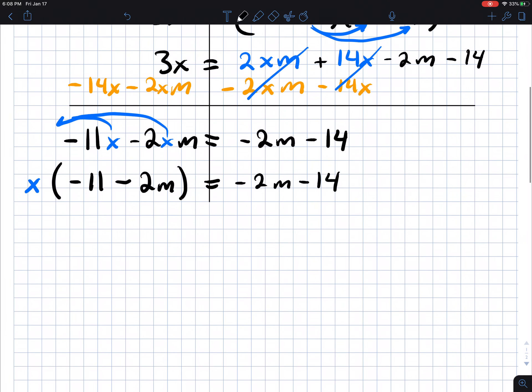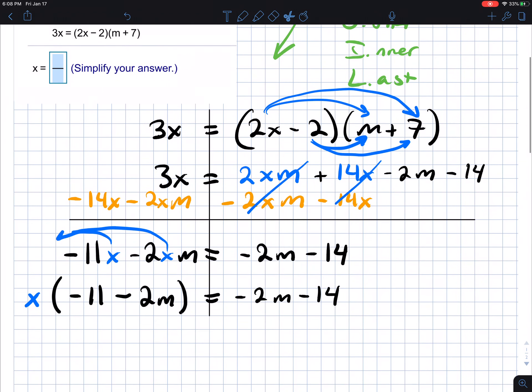So now at this point, we just have something times x. So we just need to move that something. What's the inverse operation of multiplication? The inverse operation of multiplication is division. So we're going to divide both sides by this something.